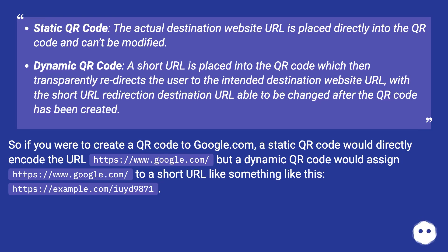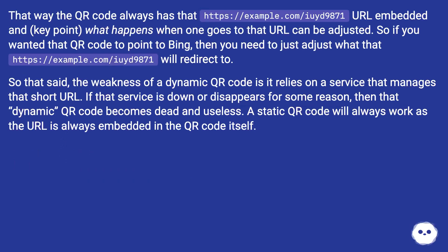So if you were to create a QR code to google.com, a static QR code would directly encode the URL https://www.google.com/, but a dynamic QR code would assign https://www.google.com/ to a short URL like https://example.com/u9871. That way the QR code always has that short URL embedded and, key point, what happens when one goes to that URL can be adjusted.